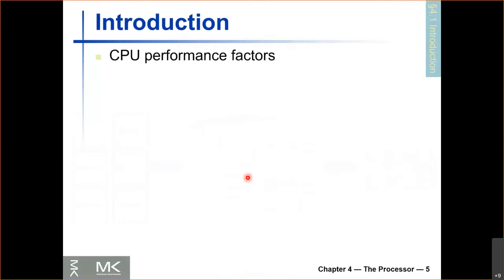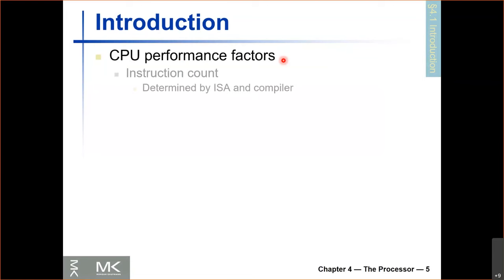Let's get started with talking about a data path. Before that, a quick introduction. We've seen before about CPU performance factors: the number of instructions needed to express a program, the CPI (cycles per instruction), and the clock frequency. The instruction count is determined by the ISA and how good the compiler is at generating code. So what we've covered so far impacts instruction count — designing an ISA that allows you to express programs briefly but is also easy to implement efficiently.